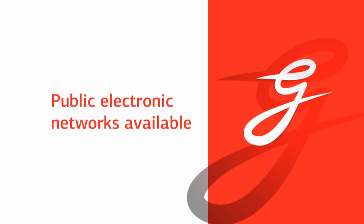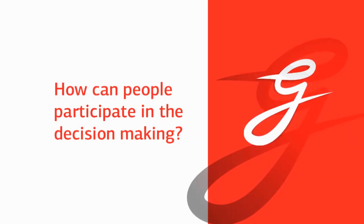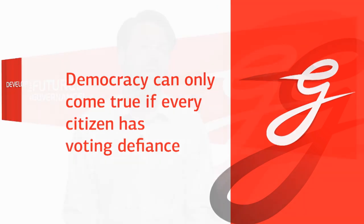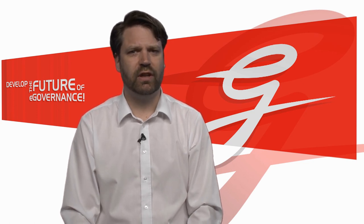And that really can be seen as one of the first right after the Second World War, when people like Buckminster Fuller, actually an architect, was thinking about how people can participate in decision making. And he was actually saying that democracy can only become true when every citizen would have a voting device in his or her home, to be able to participate in all decision making issues that are at stake.